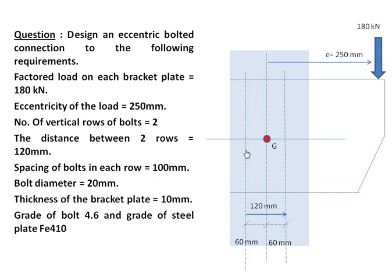The spacing of the bolts in each row is 100 mm. This distance is parallel to the line of action of the load, so it is the pitch distance. The pitch distance is the distance between bolts parallel to the line of action of the load.